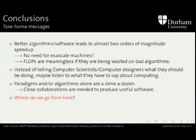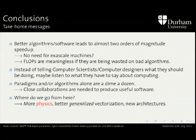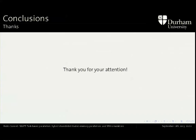The final question: where do we go from here? Well, from 40 to 400, obviously. In the first phase, we want more physics, more generalized vectorization, and new architectures — GPUs and the Phi. We'll also continue developing this task-based paradigm to get the most we can out of it and our software. Thank you very much for your attention.